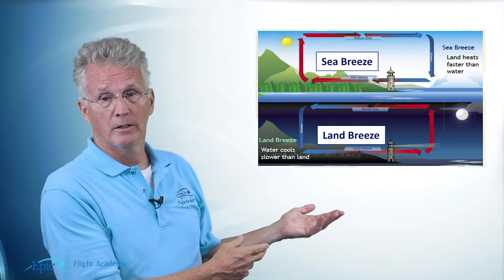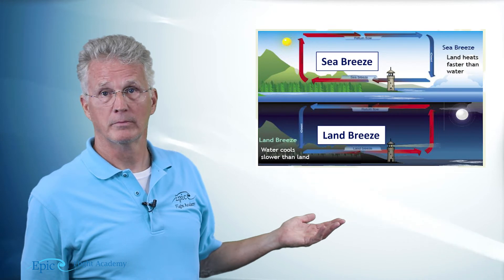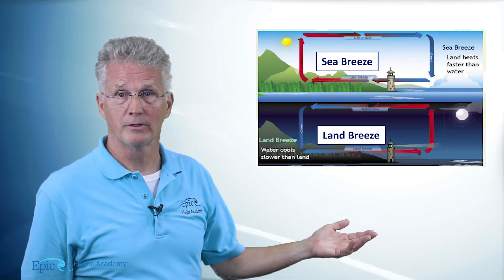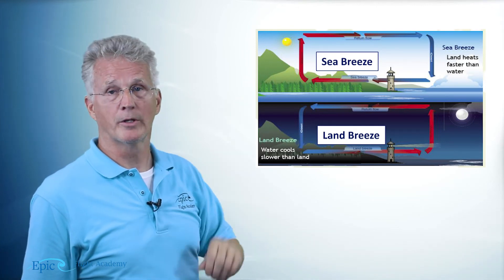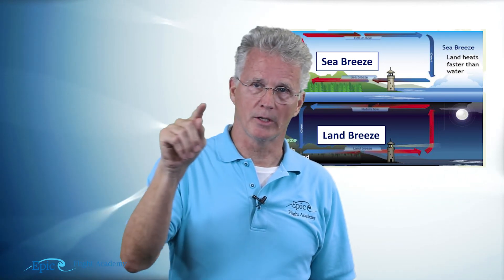Now what happens when the sun goes down? Well, the exact reverse. Why? We said that land heats and cools faster, water heats and cools slower. So now we see the moon rising in this diagram — the land has cooled faster, the sea is relatively warmer, the air rises up there, there's high pressure aloft, it flows in over the land, sinks, makes high pressure over the land, and flows out to sea to fill that low pressure over the water. And we start that land breeze cycle.